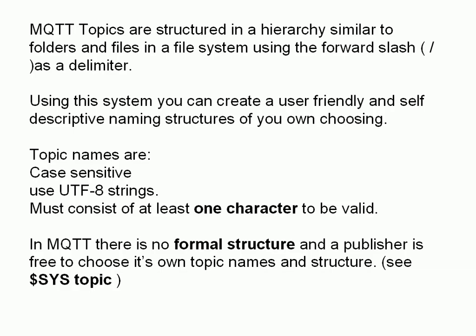MQTT topics are structured in a hierarchical fashion, similar to folders and files in the Unix file system, because they use a forward slash as the delimiter. Using this system, you can create a very user-friendly and self-describing naming structure of your own choosing. Topics are case-sensitive, they use UTF-8 strings, and must consist of at least one character to be valid. You can have spaces in topics, but it's not recommended — use dashes or underscores instead.